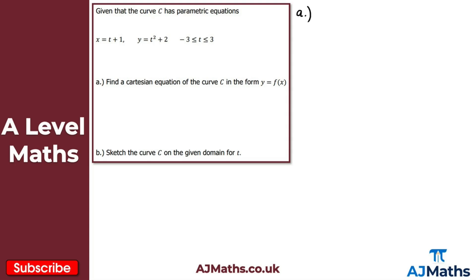Where do we begin? If we're looking for the Cartesian equation in the form y equals f of x, it makes sense to rearrange the equation for x, make t the subject, and then substitute that into the equation for y. So writing down the parametric equations — x equals t plus 1 and y equals t squared plus 2 — we rearrange and make t the subject: t equals x minus 1.